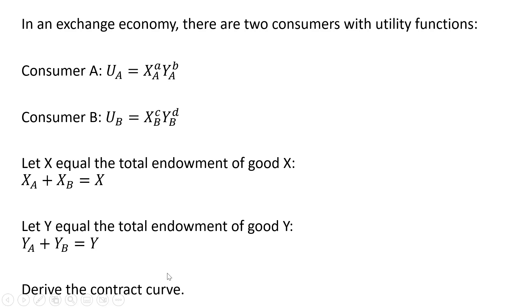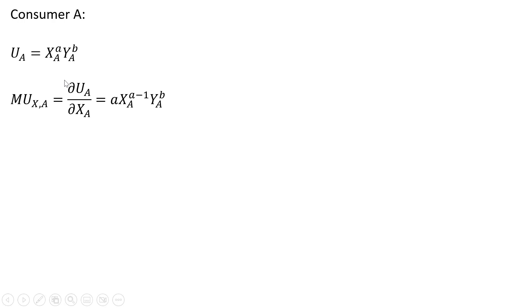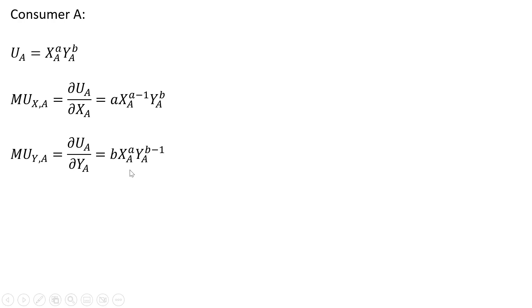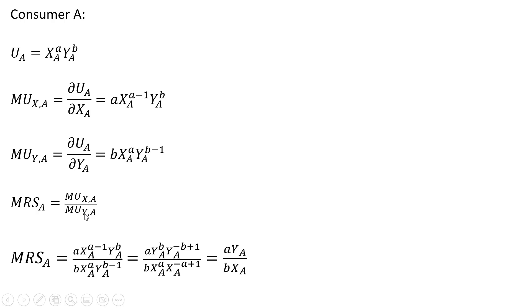We're going to derive the contract curve given this information. Starting with consumer A, we're going to get the marginal utility of good X by taking the partial derivative of this Cobb-Douglas utility function with respect to X, and we get back this result. Getting the marginal utility of good Y, we take the partial derivative with respect to good Y and get back this result. We form the marginal rate of substitution for consumer A — the ratio of marginal utility of good X to marginal utility of good Y — and that simplifies down to the following.